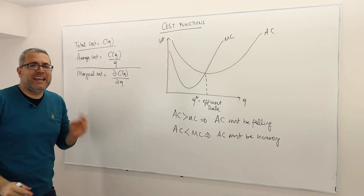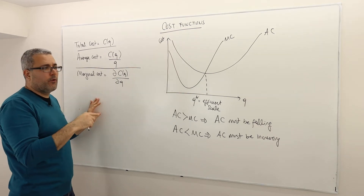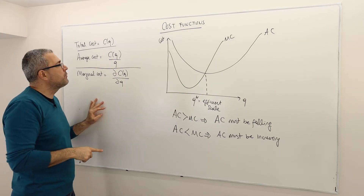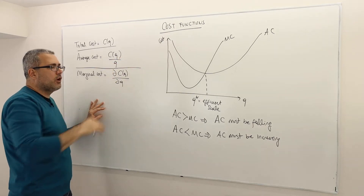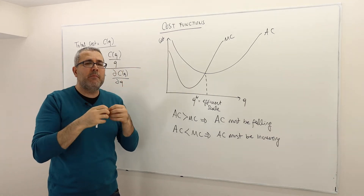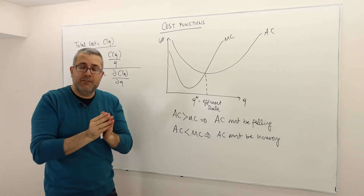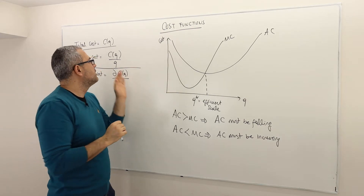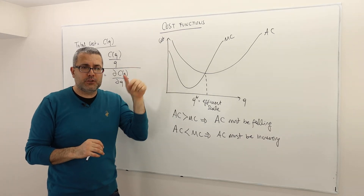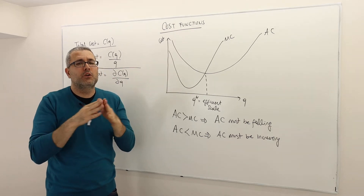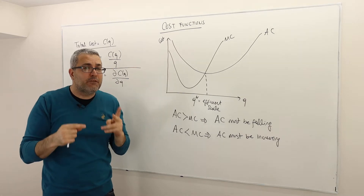Mathematically, average cost is just taking the average of the cost — it's C(Q) divided by Q. Marginal cost, however, is the slope of the cost function, so you take the derivative of the cost with respect to quantity. Are they different? Almost always different. Average cost is the amount of money you need to spend per output, whether you're producing one, two, or three outputs. The marginal cost is the cost of an additional output — it's different than average cost.